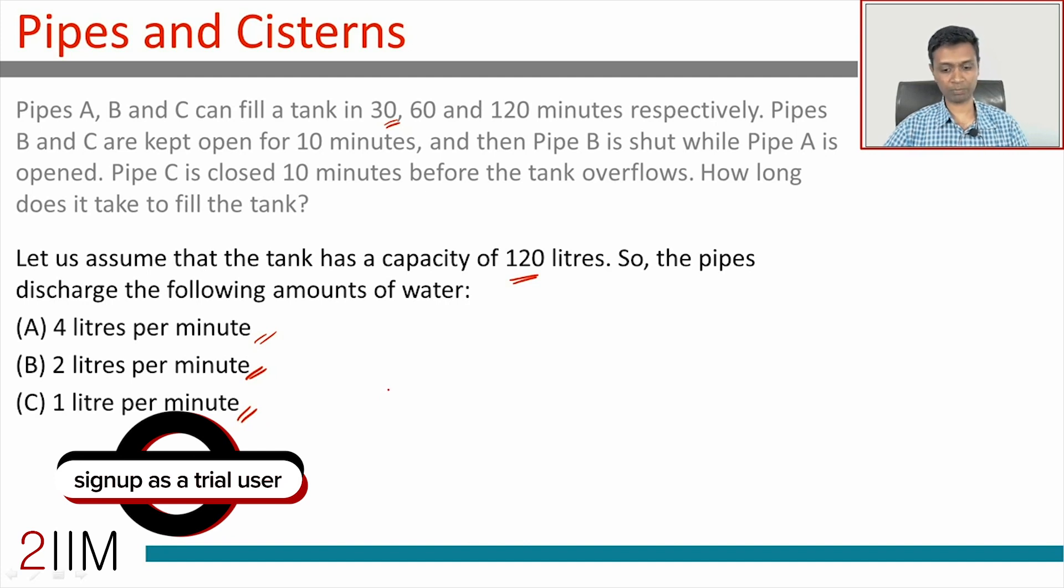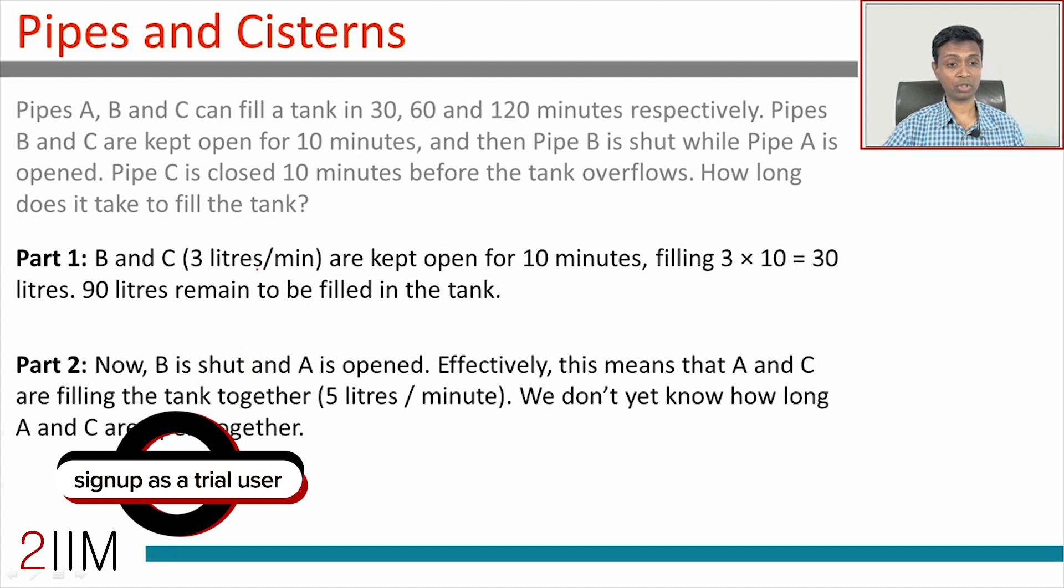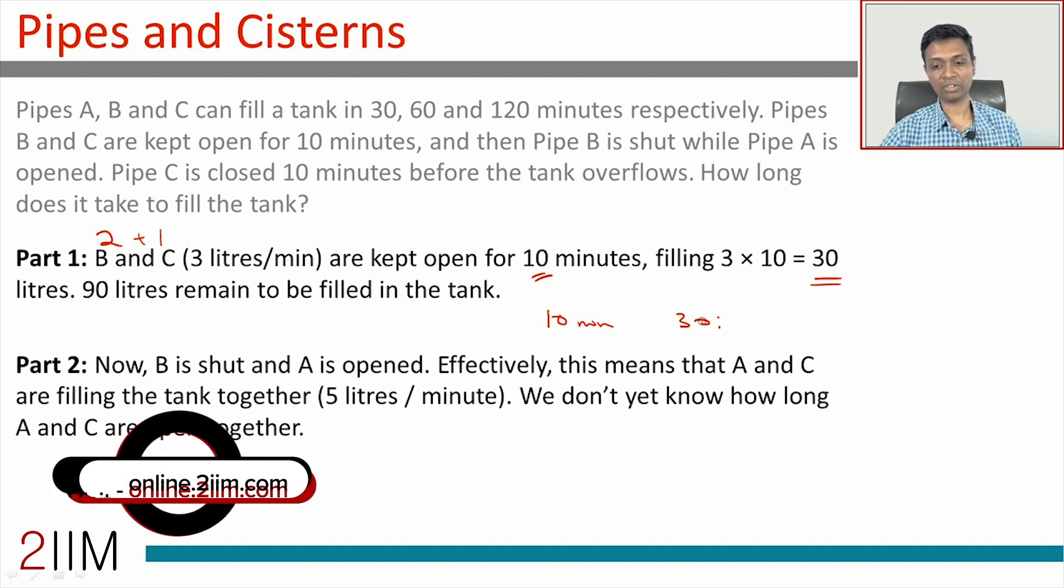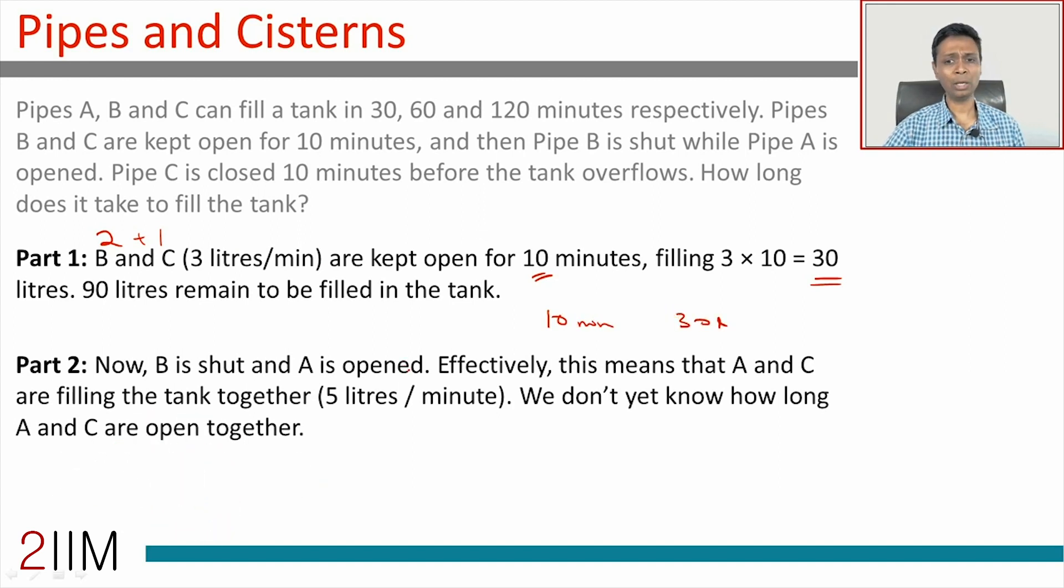Now let's come to the question. Pipes A, B, and C are kept open for 10 minutes. B and C together contribute 2 plus 1, which is 3 liters per minute. They are kept open for 10 minutes, therefore filling 30 liters. So in the first 10 minutes, 30 liters get filled.